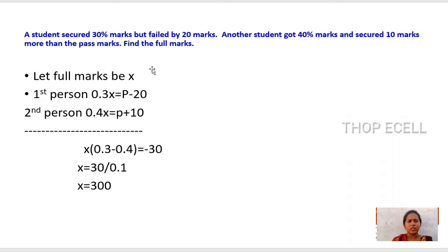Let us take full marks as X. One person secured 30% marks but is failing by 20 marks, and the second person has 40% marks and passed by 10 marks. We will take 0.3X equal to P minus 20, where P is the pass mark, and 0.4X equal to P plus 10. By solving these equations, we get X(0.3-0.4)=-30, which gives x=30/0.1, so x=300.